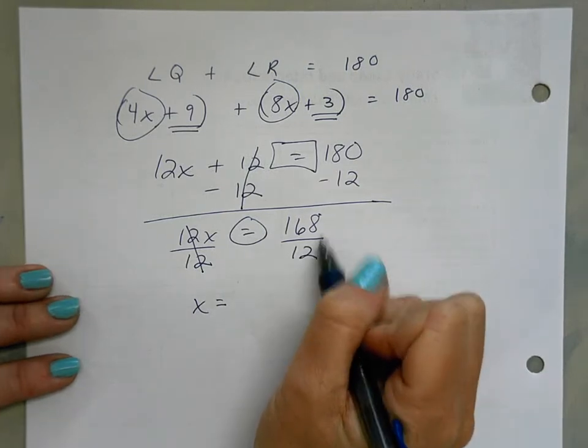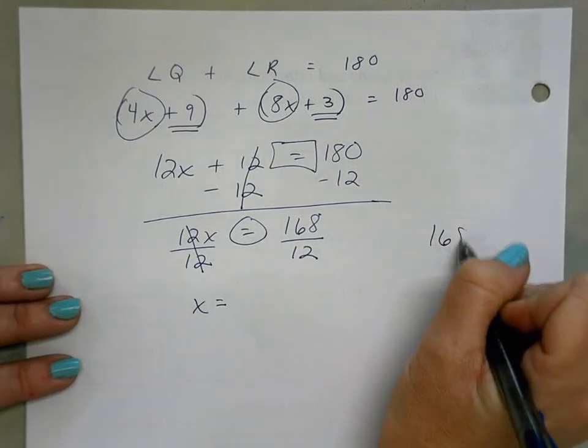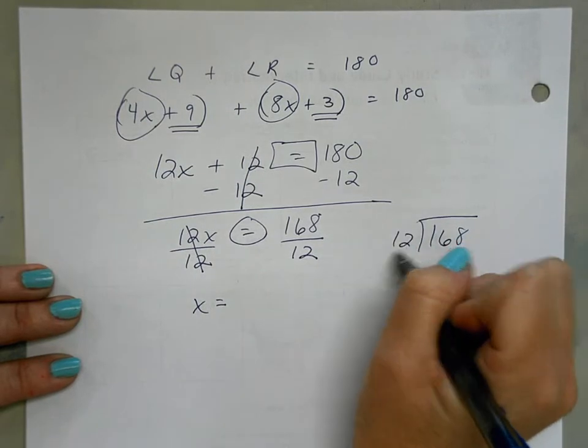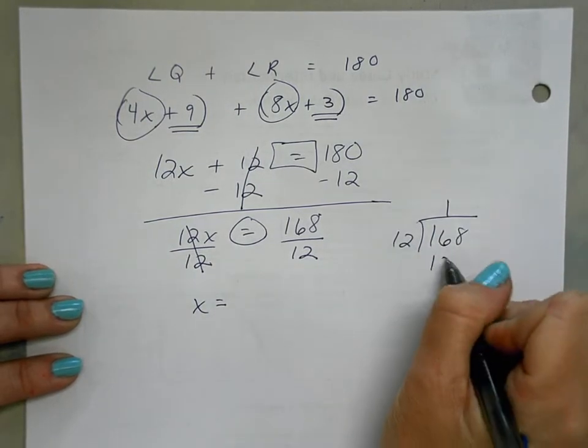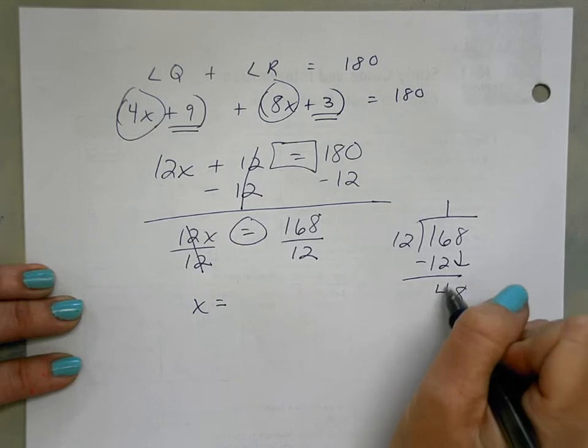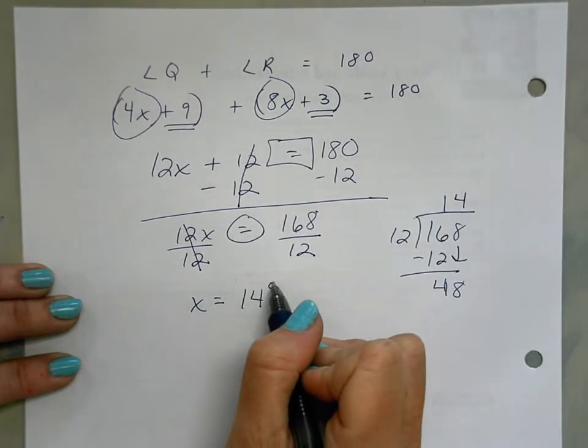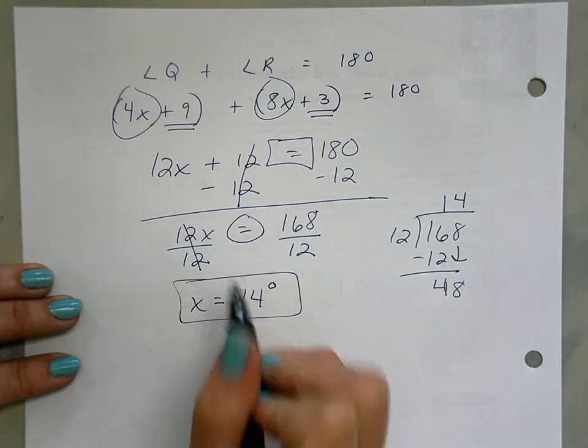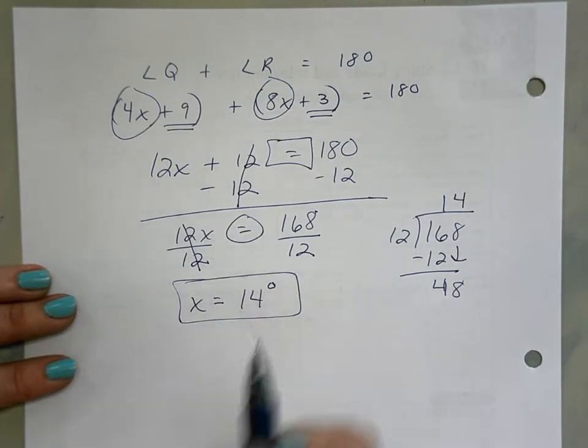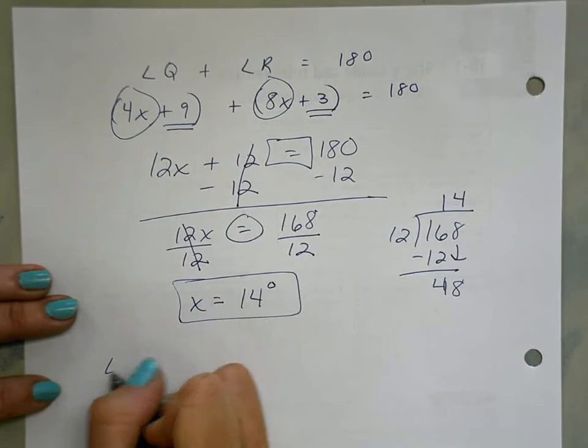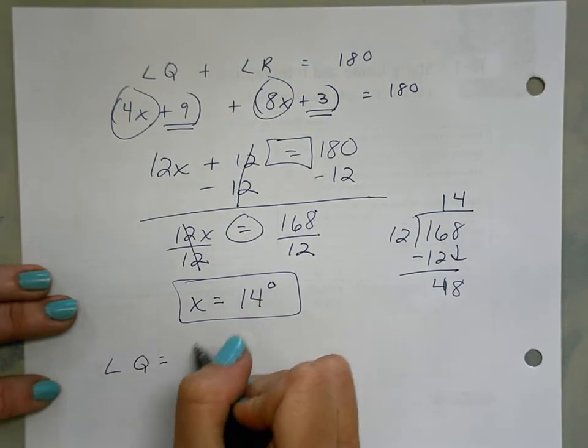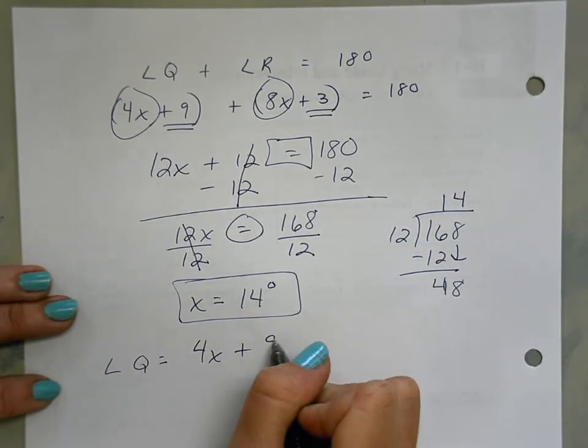I'm going to divide 168 divided by 12, so 12 goes into 16 once, and 12 goes into 48 four times. X equals 14 degrees. Wonderful work! Not our final answer because it said what's the measure of each angle.